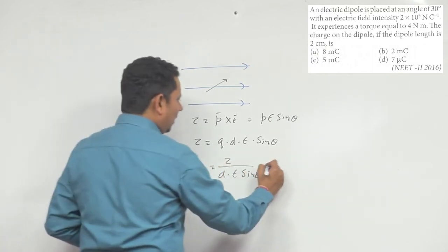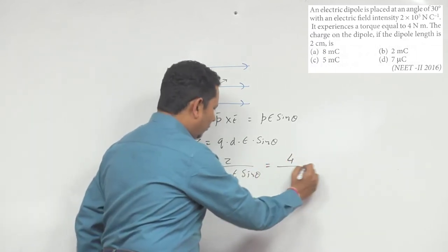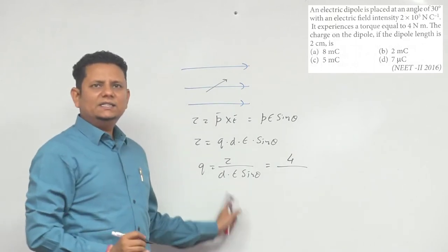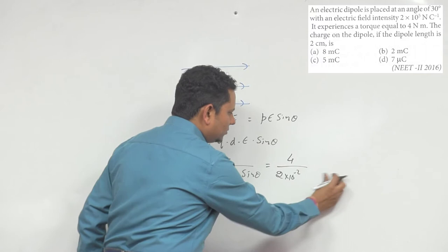So we'll get the value of q. The torque given to us is 4. The distance d given is 2 cm, which in SI units converts to 2×10^-2 meters.